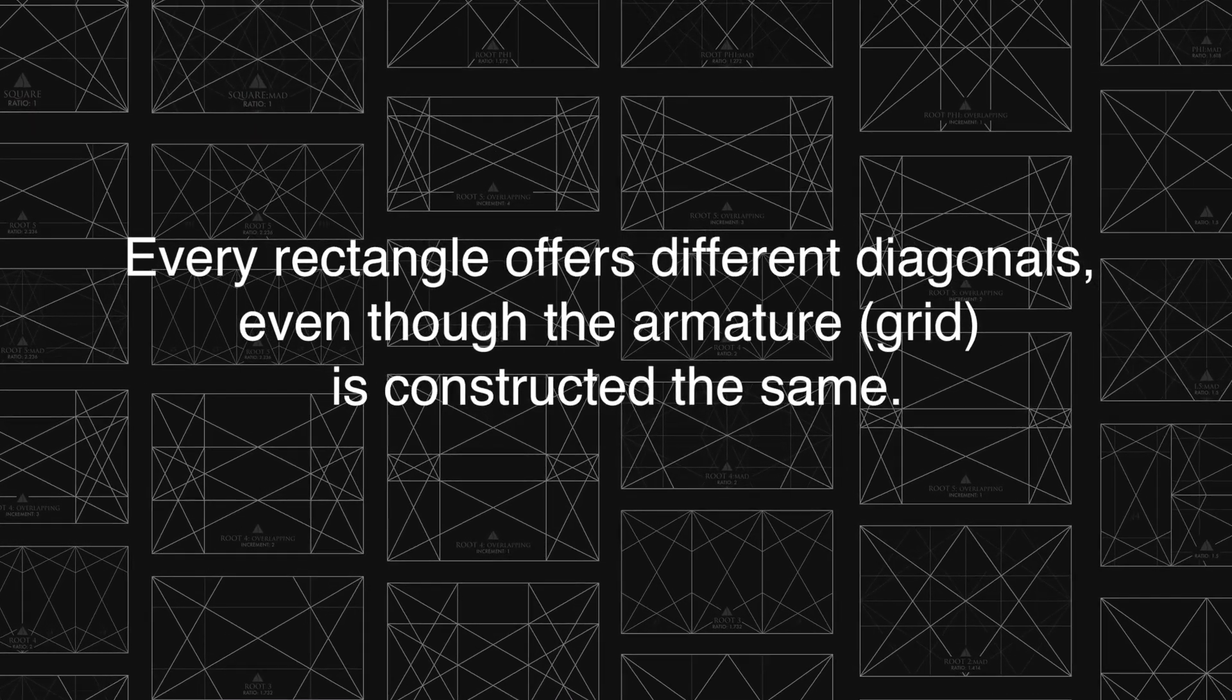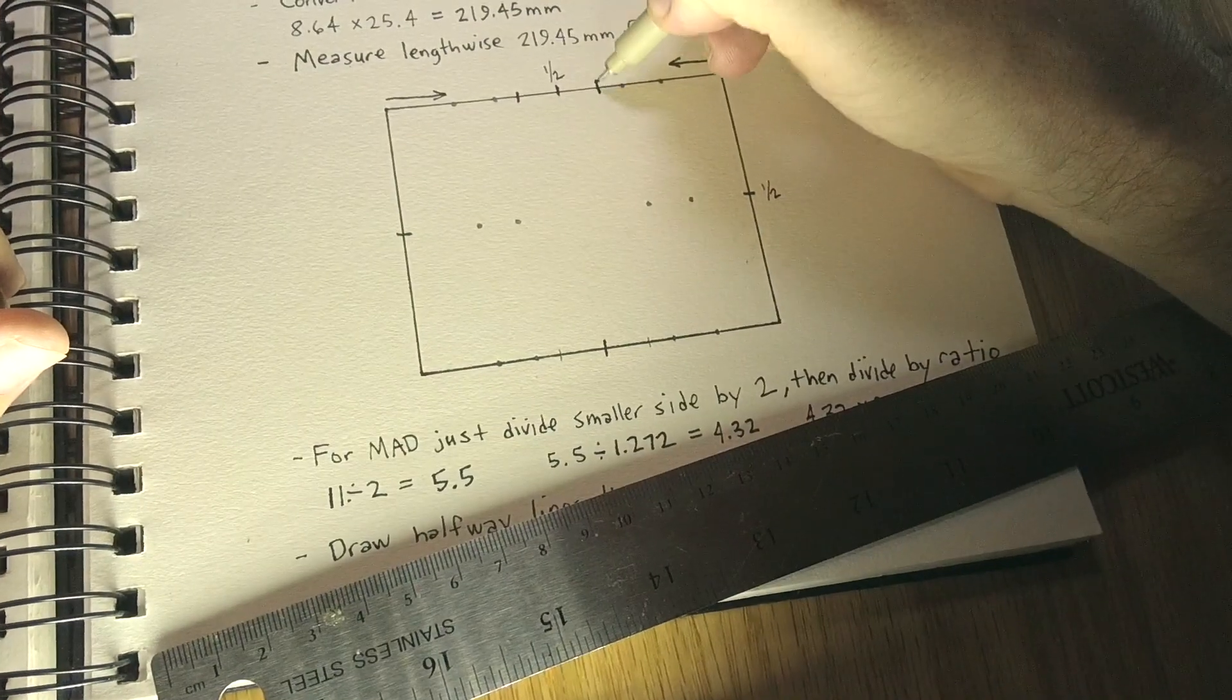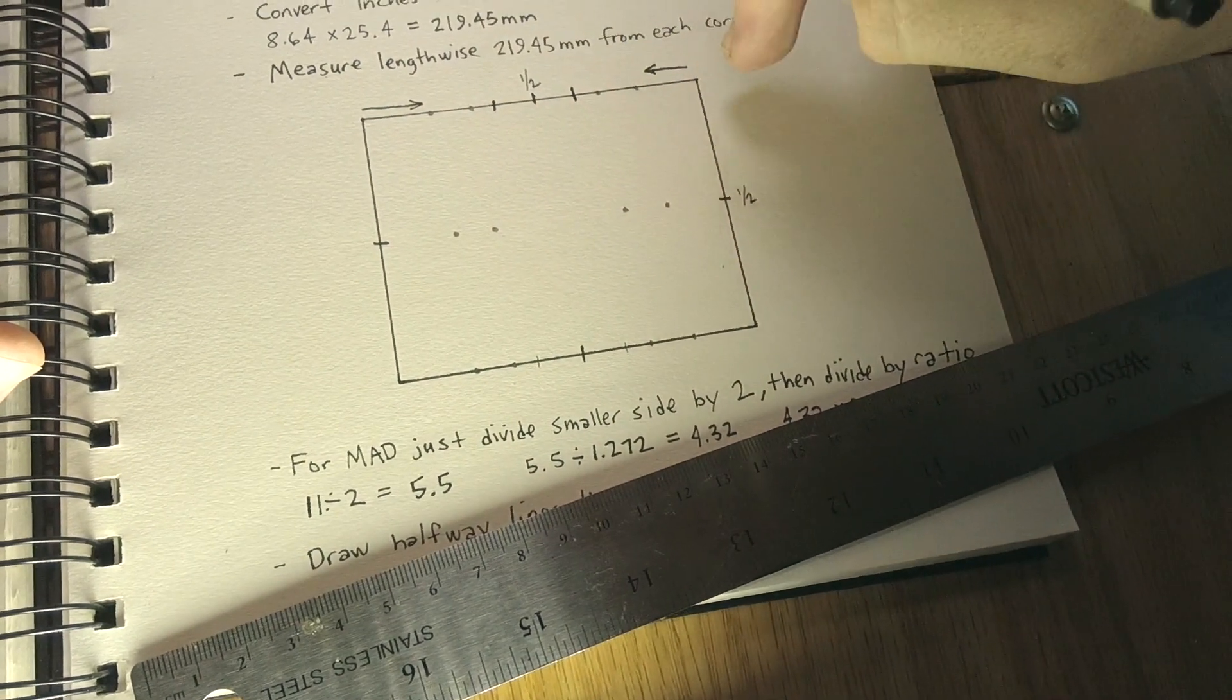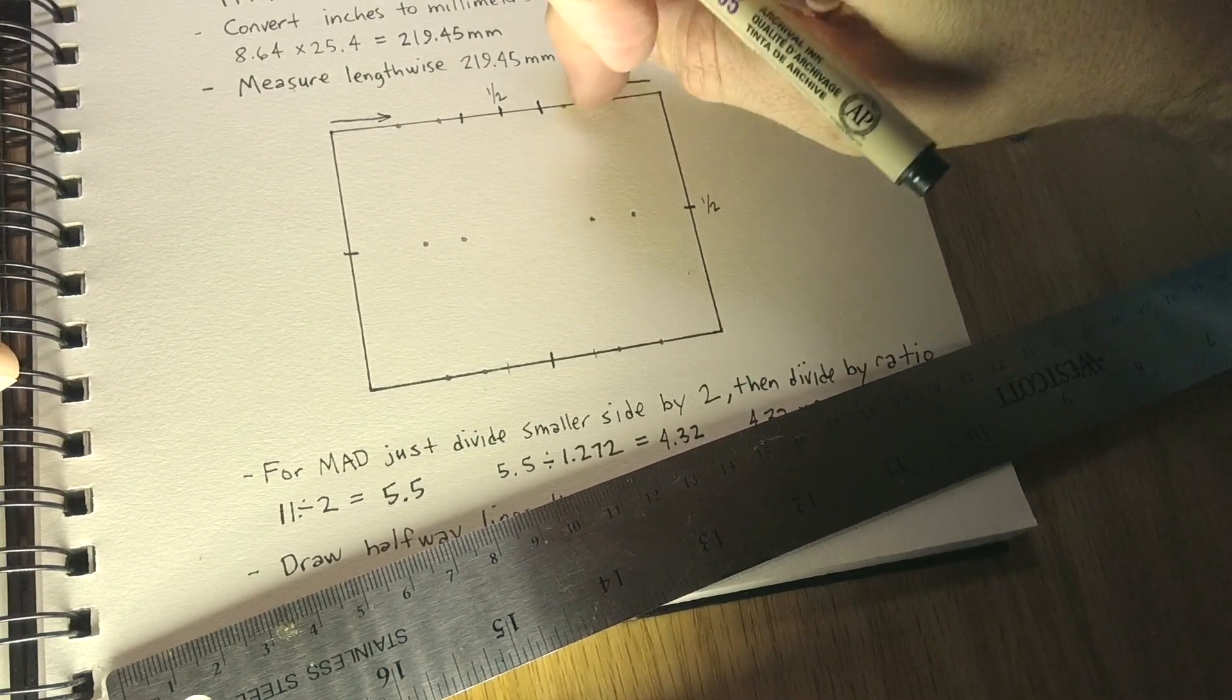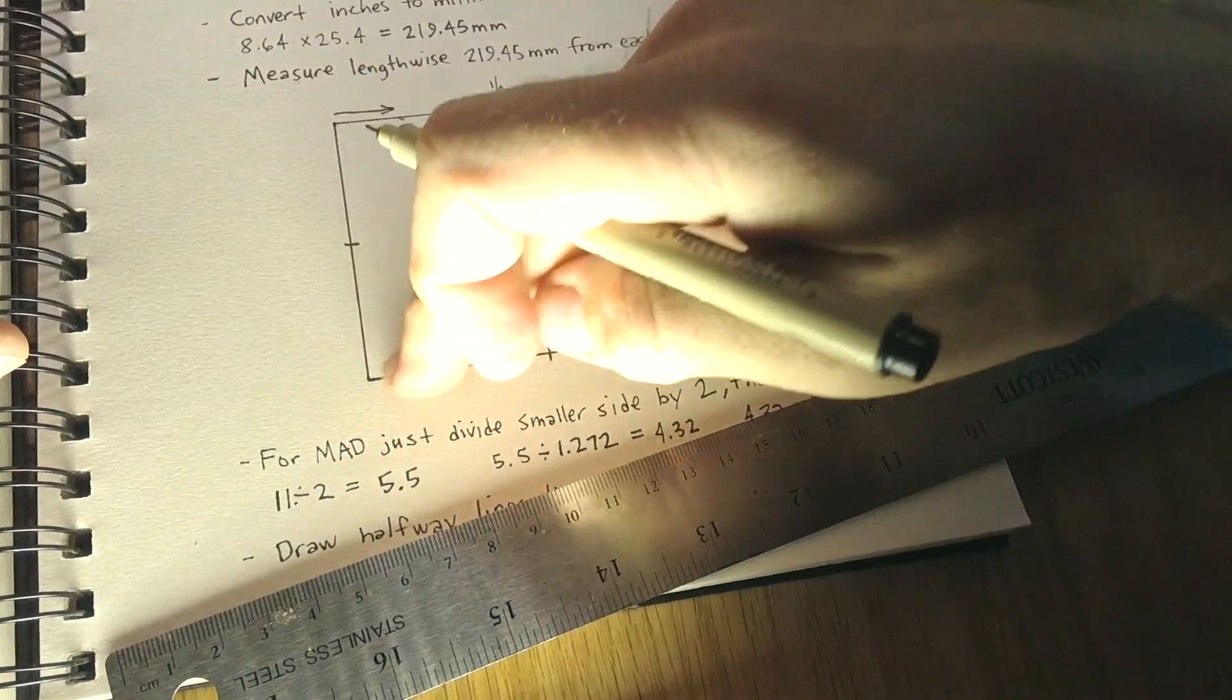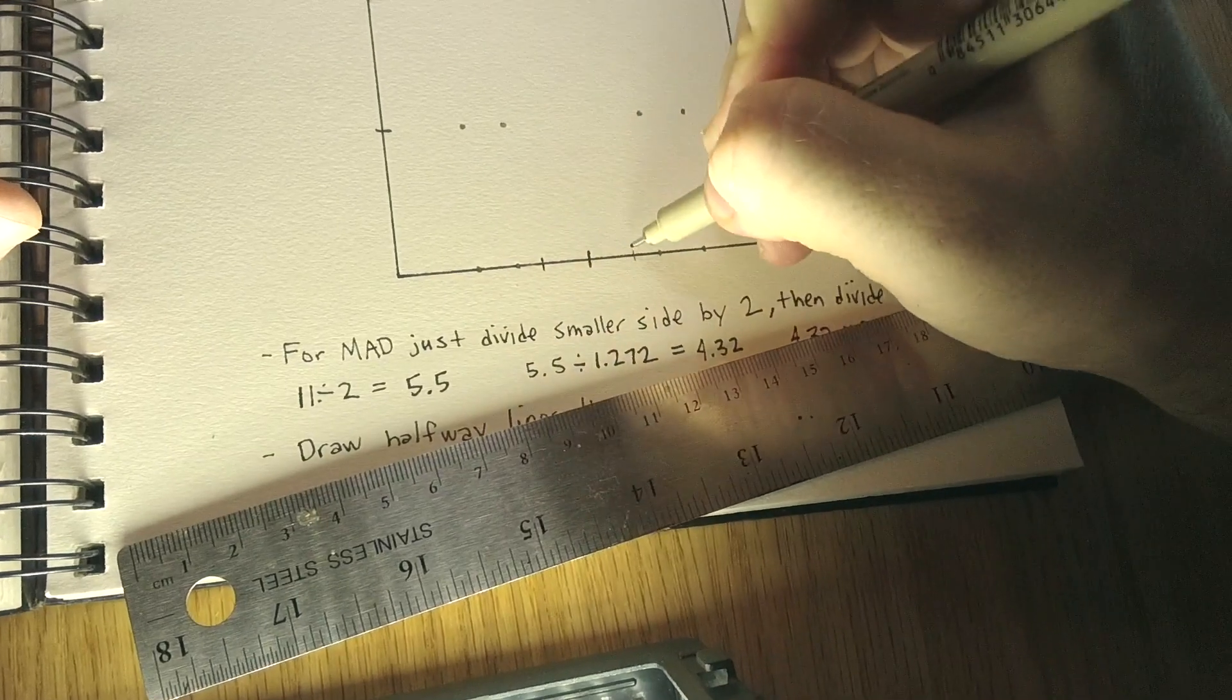So we're actually going to cross over the halfway mark and then this is going to be our measurement from this corner. So then we measure from this corner 219.45 millimeters and we get this mark and we do it from each corner and we get our separate marks.